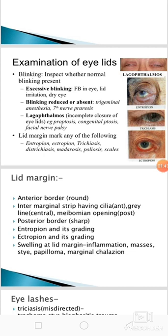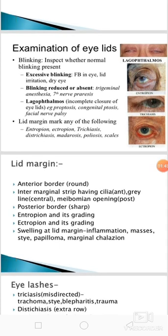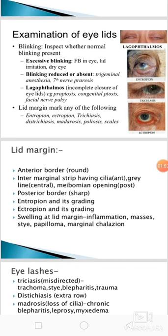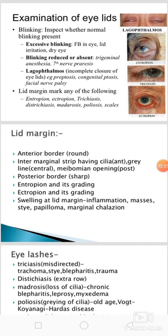The lid margins may have entropion — inward turning of the lid margin; ectropion — outward turning of the lid margin; or trichiasis — the misdirected cilia rubbing the eyeball; distichiasis — an abnormal extra row of cilia taking place of meibomian gland; madarosis — absence of cilia; poliosis — graying of cilia as seen in old age; and scales over the lid margin.